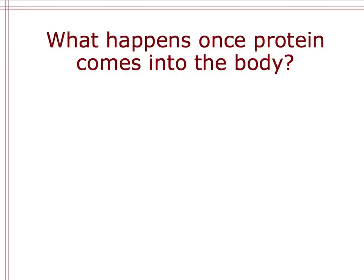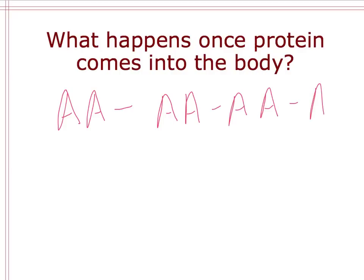We can think about how protein comes into the body. When we eat protein, it comes in as a long chain of various amino acids. Once it comes into the body, our body doesn't necessarily need that protein in that exact form — it may need protein for making immunoglobulins for the immune system, or for making lipoproteins to transport lipids. The primary amino acid metabolism happens in the liver.